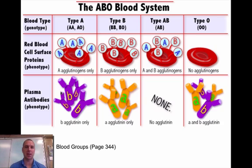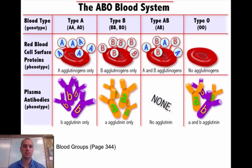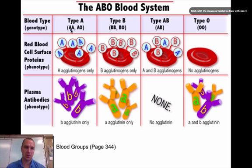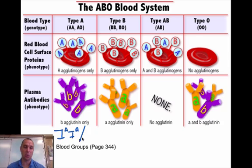The last thing I want to cover today is ABO blood types. There are four blood types: A, B, AB, and O. A person with A blood can be two ways — they can either be homozygous, which we write as capital I-A, capital I-A, or heterozygous, which is capital I-A, little i.